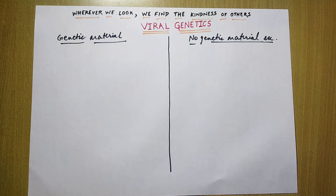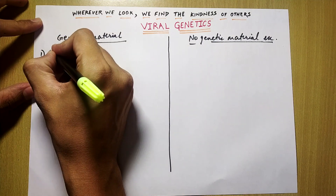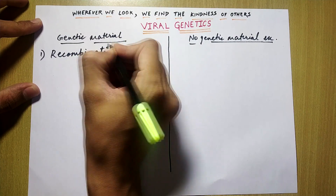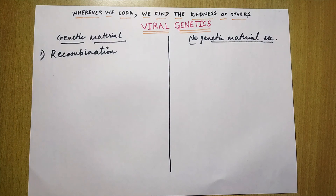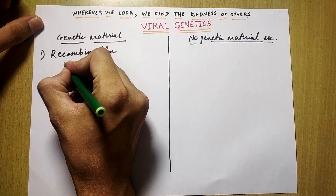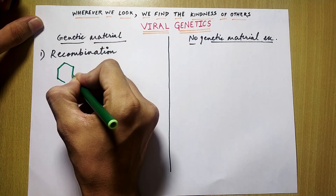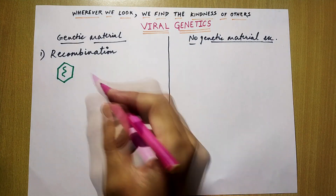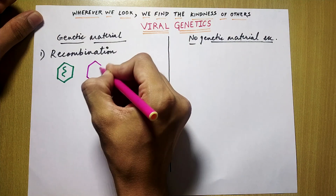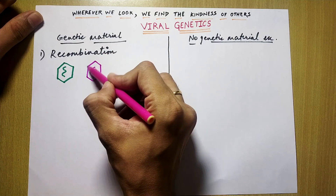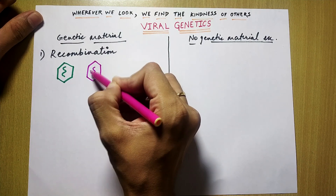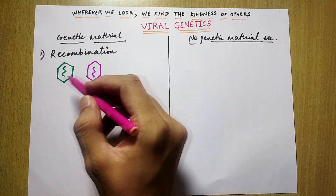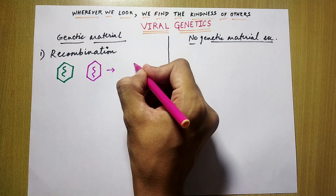The processes in which there is exchange of genetic material — the first one is recombination. Let's try to understand what exactly is recombination. Here is virus A and here is the genetic material of virus A. Now we have virus B. This outer part is the protein capsid and the inner part is the genome, the genetic material. Now when both of them infect the cell, they open up their genomic material and when it comes out, here is how they interact.